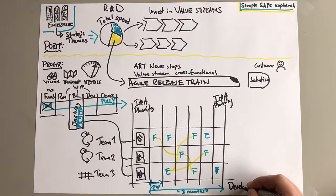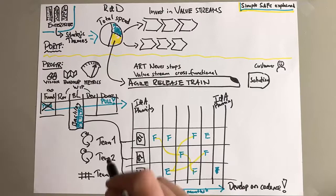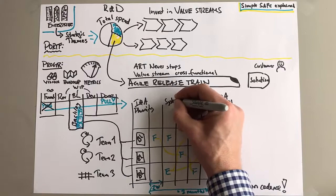We have the low level Scrum time boxes of two week sprints, and the whole team of teams, they also work in the time box - they sprint in program sprints or program increments. And that's a three month time box in this case, quarters as I was saying. So you develop on a cadence.